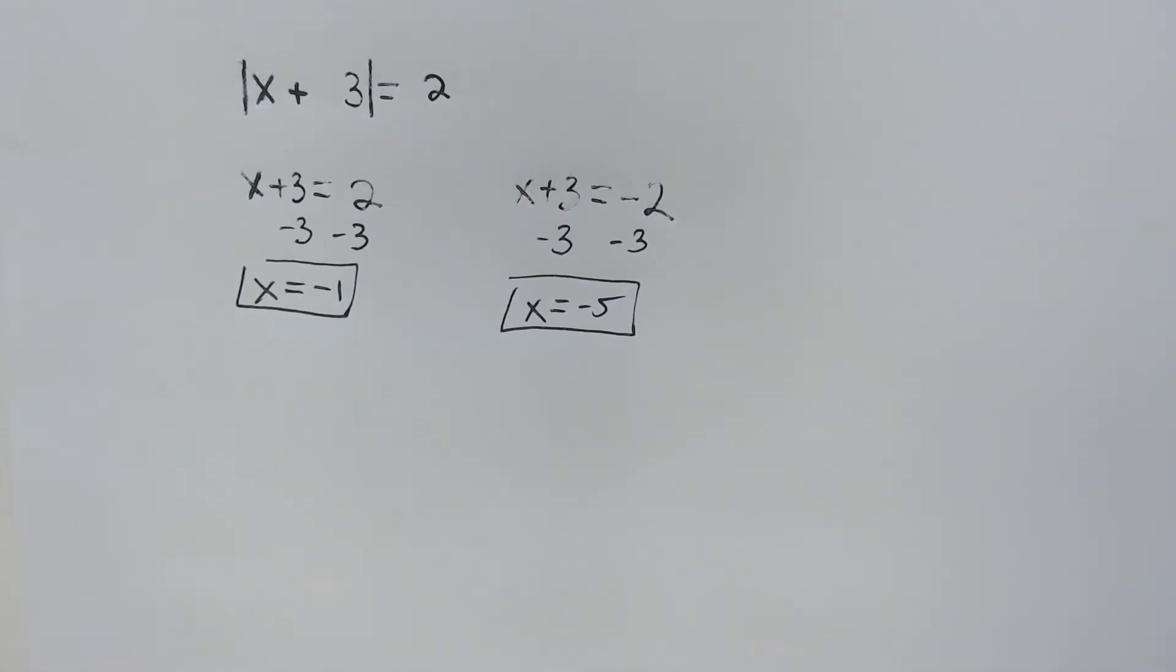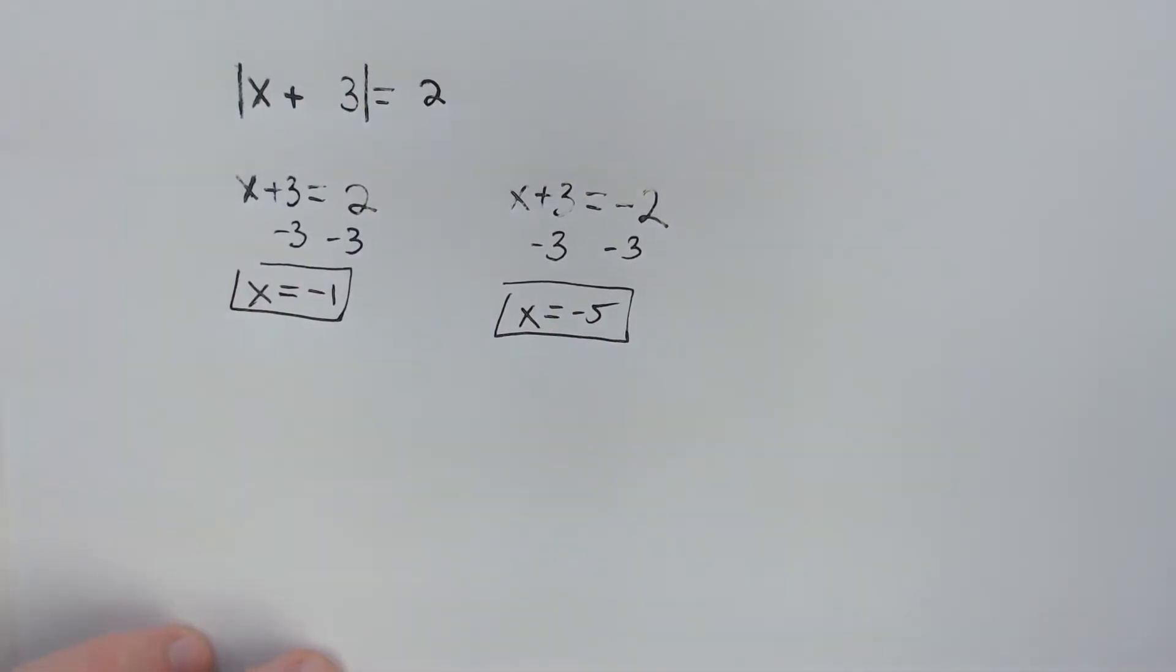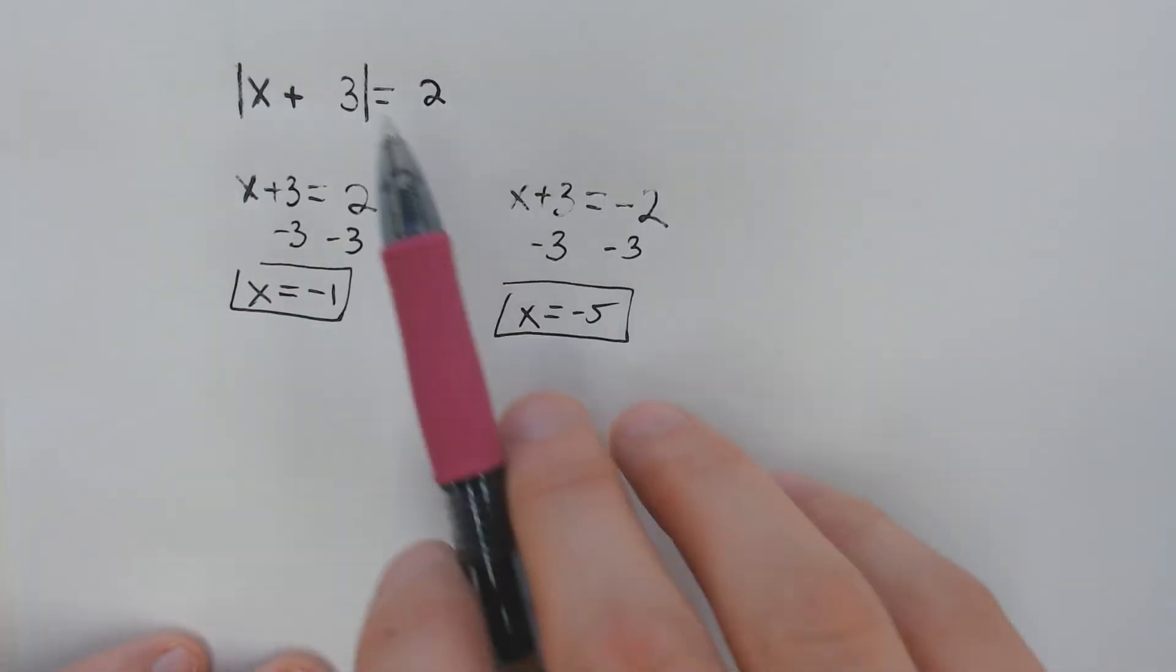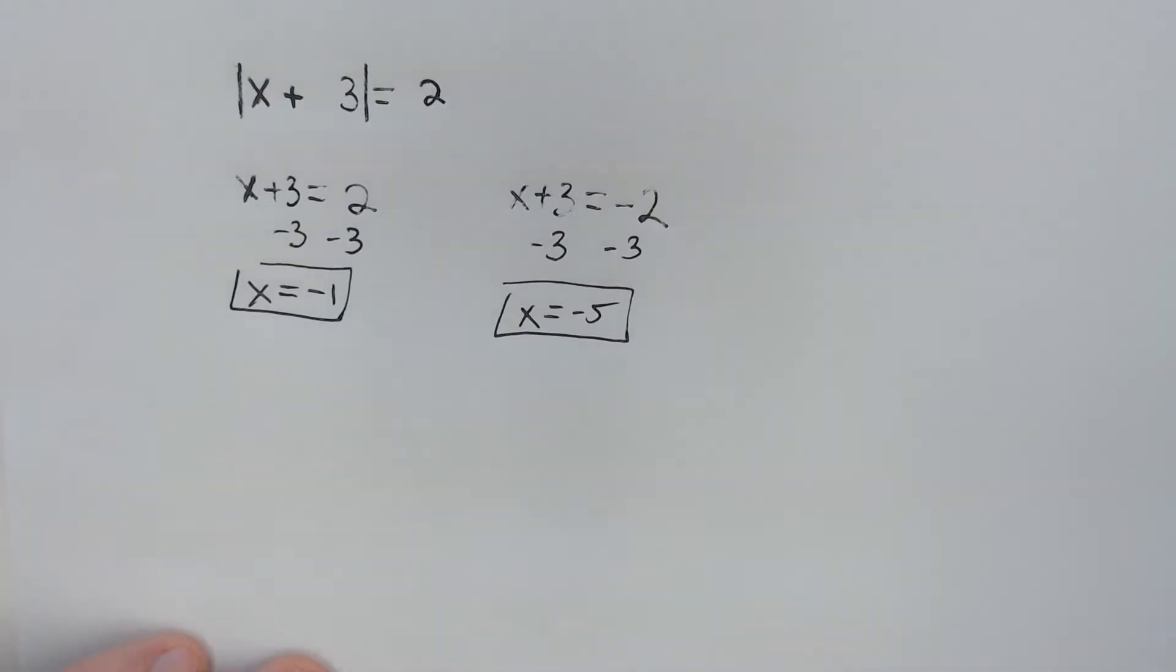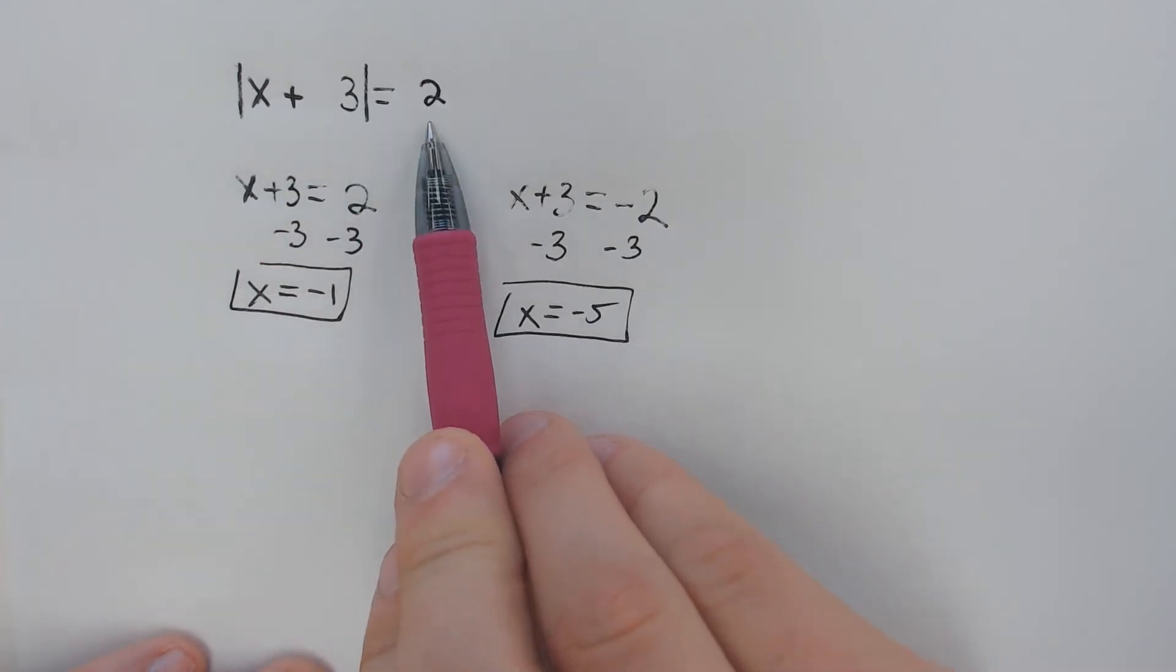We get two answers most of the time for these problems. Now for all of these, you're supposed to check for something called an extraneous solution because absolute value bars can only produce a positive answer. You should plug in the negative 1 and the negative 5. However, if you're smart and think about every problem before you even begin, can the absolute value bars equal positive 2? Yes, they absolutely can.